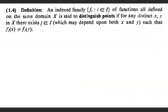Definition. An indexed family {fi} where i element of capital I of functions, all defined on the same domain x, is said to distinguish points if for any distinct x and y in capital X, there exists a particular index j element of I such that fj(x) is not equal to fj(y). Then we say that the family of functions distinguishes points.